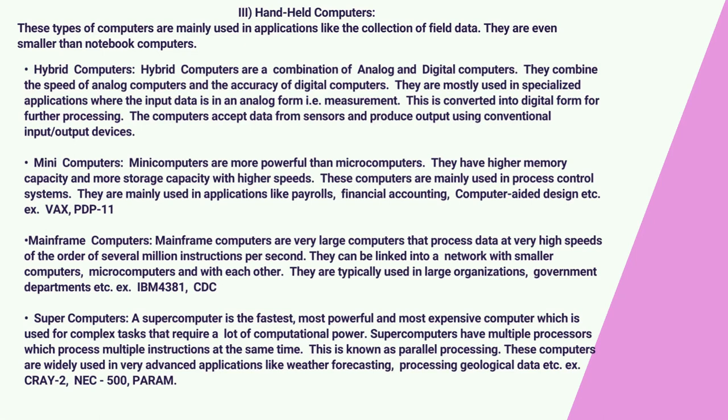Hybrid computers accept data from sensors and produce output using conventional input/output devices. Mini computers are more powerful than microcomputers. They have higher memory capacity and more storage capacity with higher speeds. These computers are mainly used in process control systems and applications like payrolls, financial accounting, and computer-aided design. Examples include VAX and PDP-11.